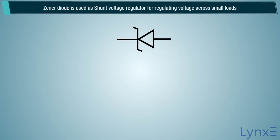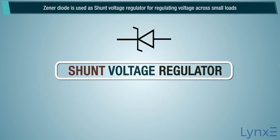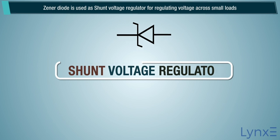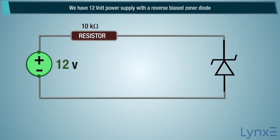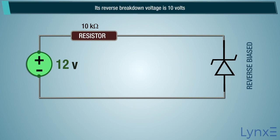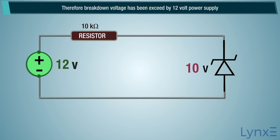Zener diode is used as a shunt voltage regulator for regulating voltage across small loads. For example, we have a 12 volt power supply with a reverse biased Zener diode whose reverse breakdown voltage is 10 volts. Therefore the breakdown voltage has been exceeded by the 12 volt supply, thus allowing current to flow through the circuit.